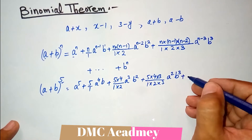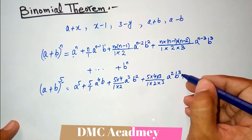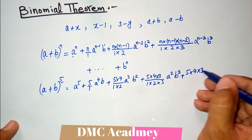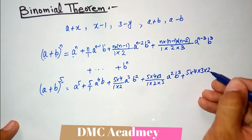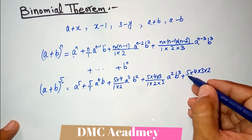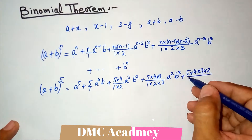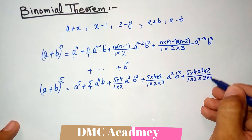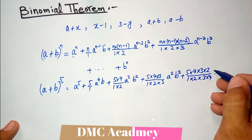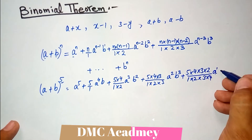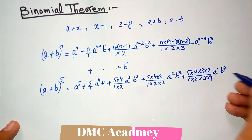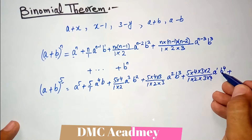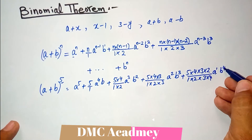It continues: 5 times 4 times 3 times 2, divided by 1 times 2 times 3 times 4, times a raised to power 1 and b raised to power 4. And at the end, all numerator and denominator factors cancel each other, leaving b raised to power 5 only. So this is our formula.